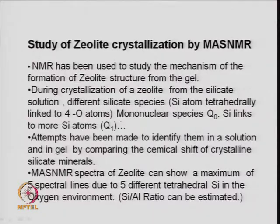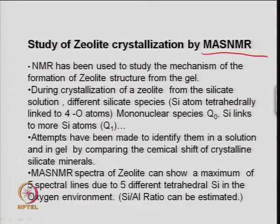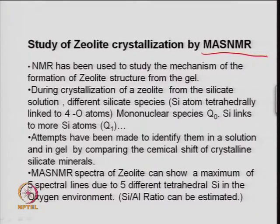MAS NMR can also be used to get the crystallinity or crystallization of zeolite. This is very important information — in terms of the structure of zeolite, silicon-to-aluminum ratio, and acid concentration. It is one of the important tools for characterization of zeolite material. NMR has been used to study the mechanism of formation of zeolite structure from the gel.